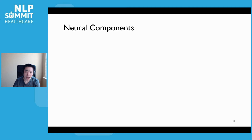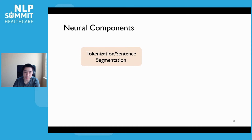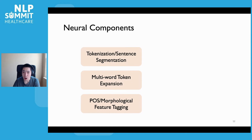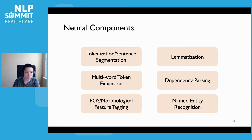At a high level, the Stanza neural pipeline can be split into six individual components: a tokenization and sentence segmentation module, which splits input into tokens and sentences; a multi-word token expansion module, which recovers underlying syntactic words from a token; a part-of-speech and morphological features tagging module; a lemmatization module; a dependency parsing module; and finally, a named entity recognition module.